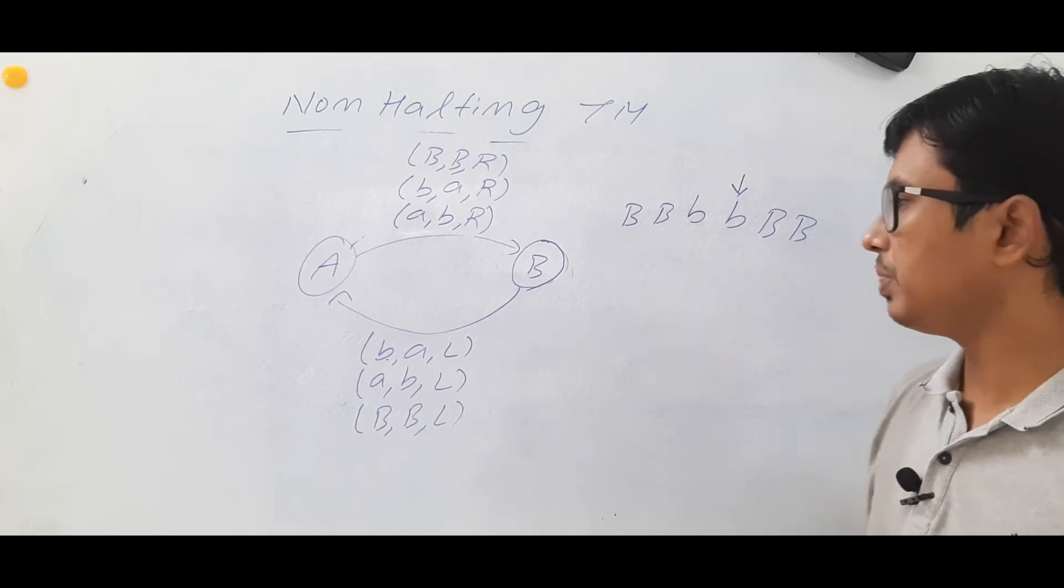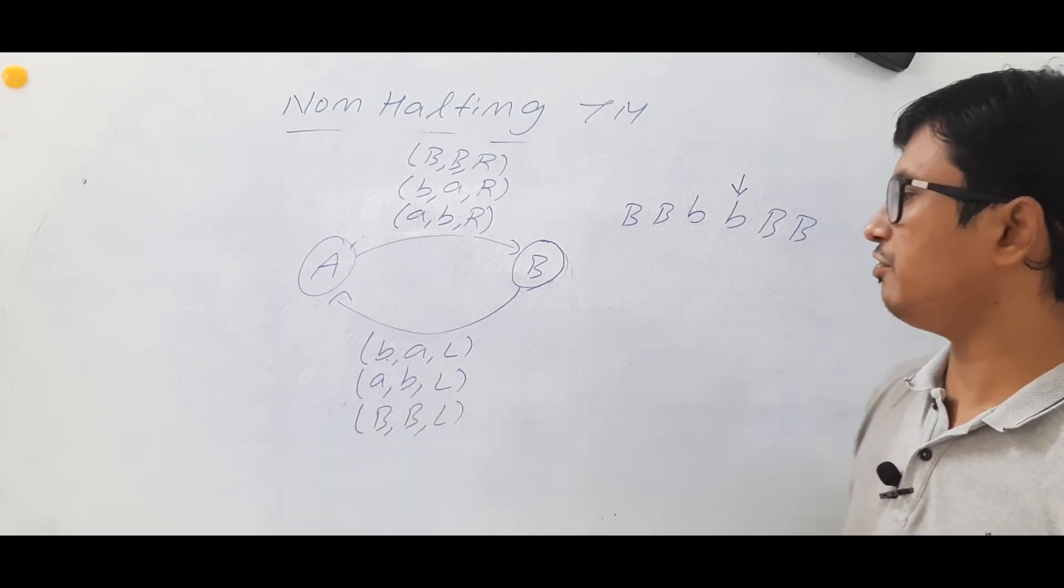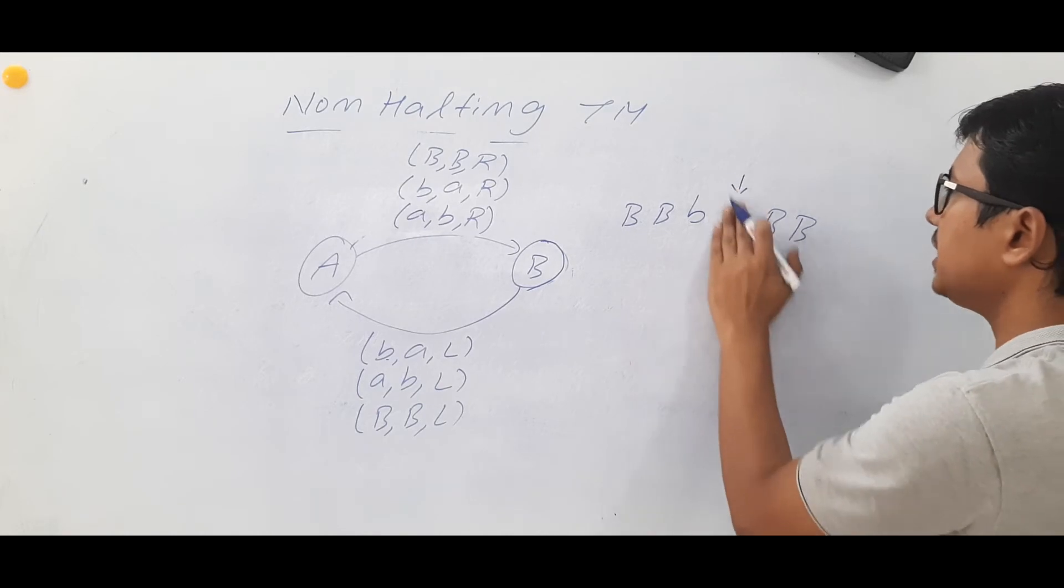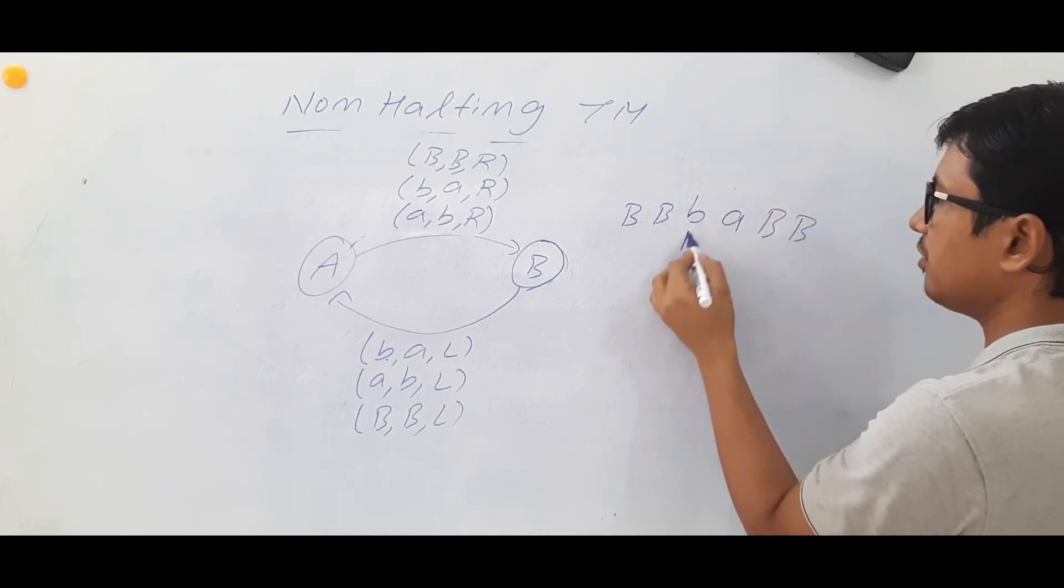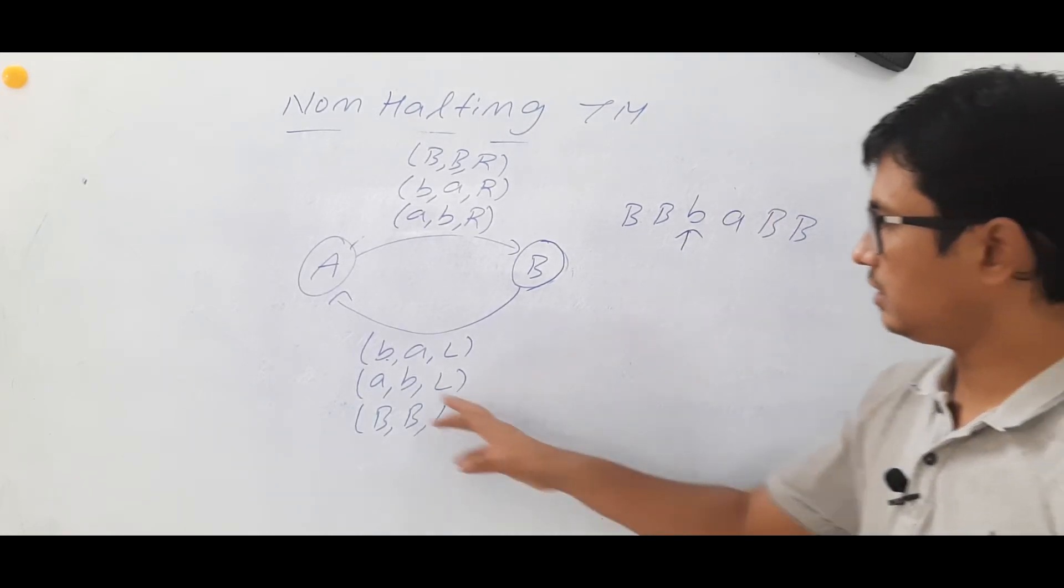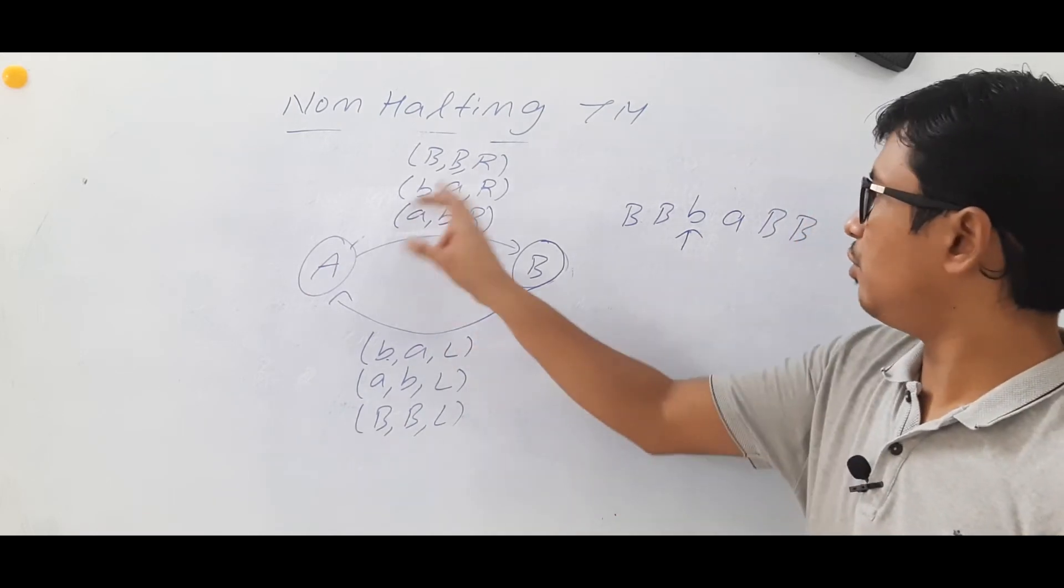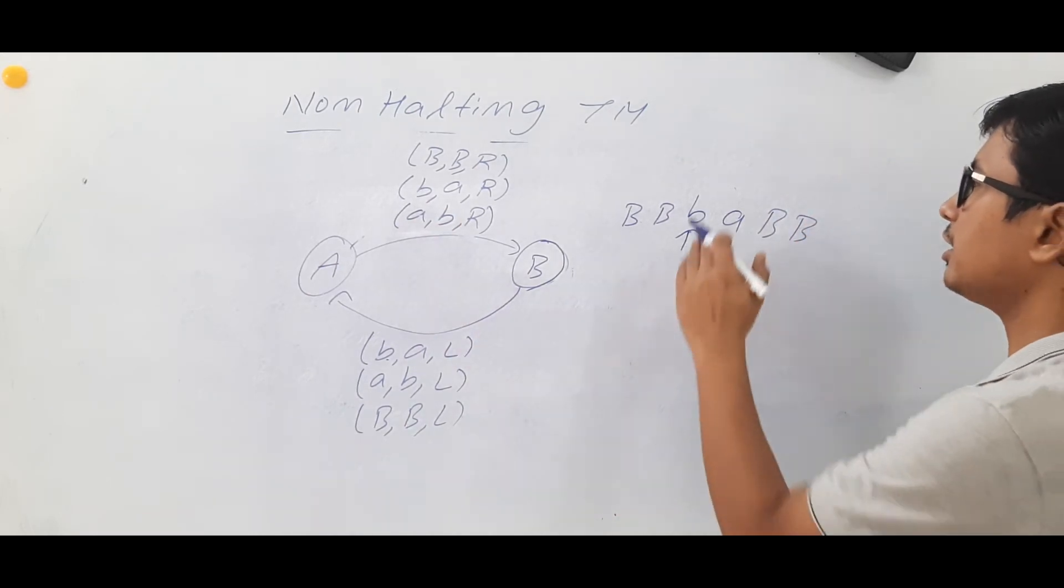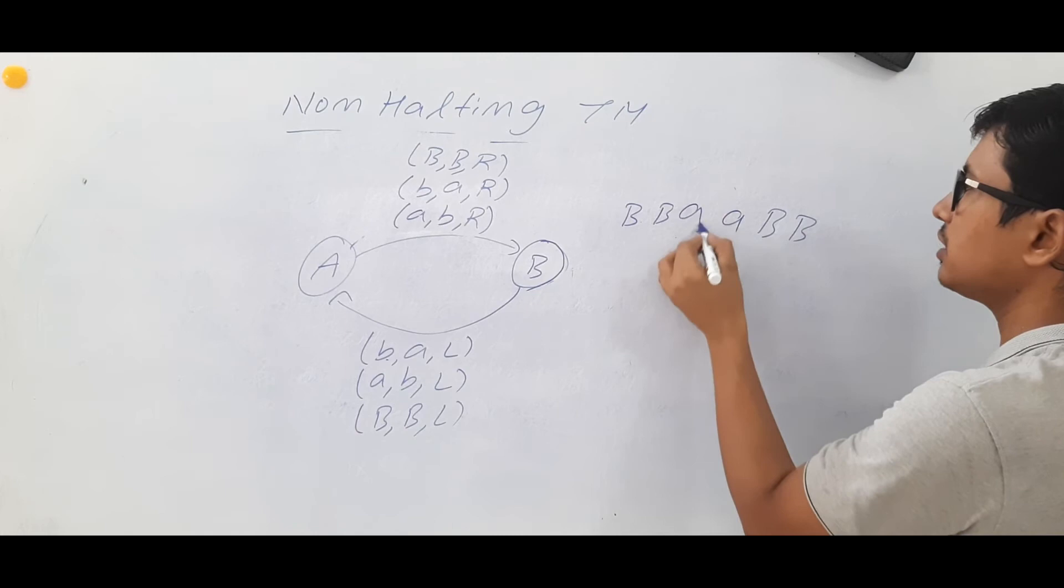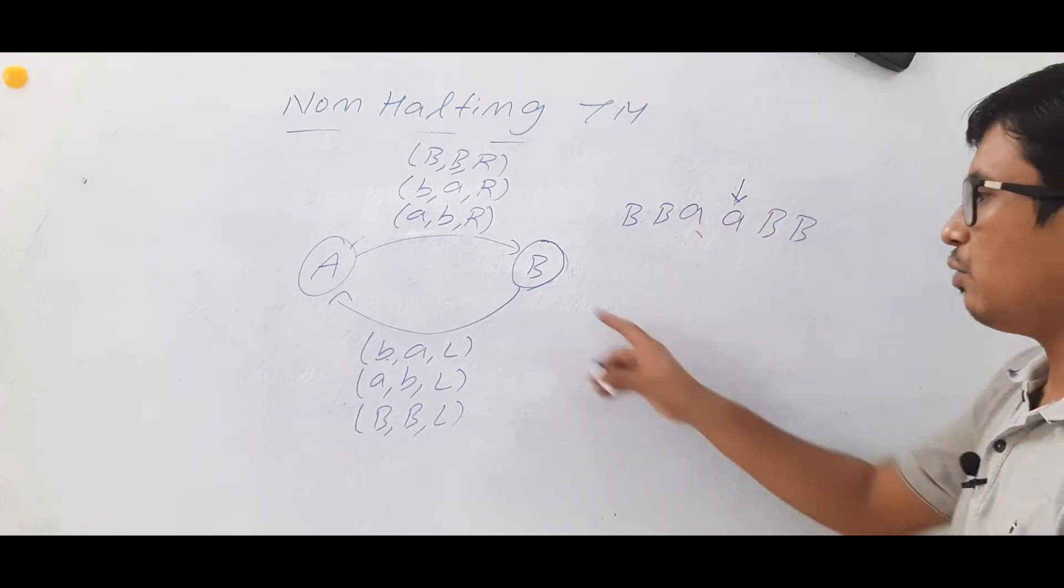From B, if you find a B, make it as A and move to the left. Good, we reach state A. Now, if you find a B, you modify it to A and move to the right.